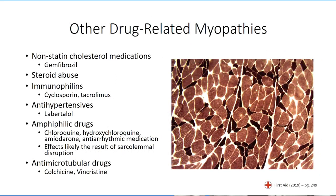Aside from the statin medications, other medications are also known to potentially cause myopathy as a side effect. One that has gained notoriety in recent times is hydroxychloroquine, an anti-malarial medication that has been proposed as a treatment for COVID-19. The medication is thought to disrupt the sarcolemmal membrane in a similar fashion to statin medication, and highlights the importance of understanding all potential side effects related to a medication prior to its use in a new patient group, as the incidence of complications such as myopathy are expected to rise in proportion to the increase in individuals treated with the medication.